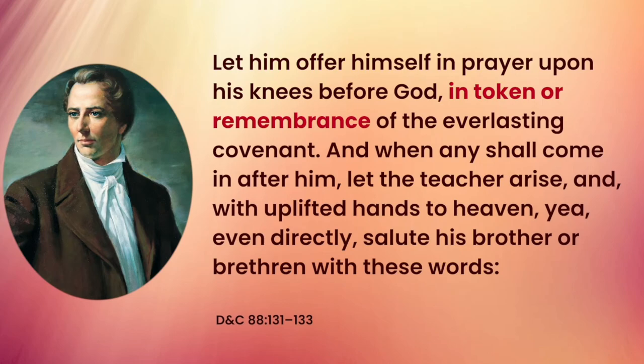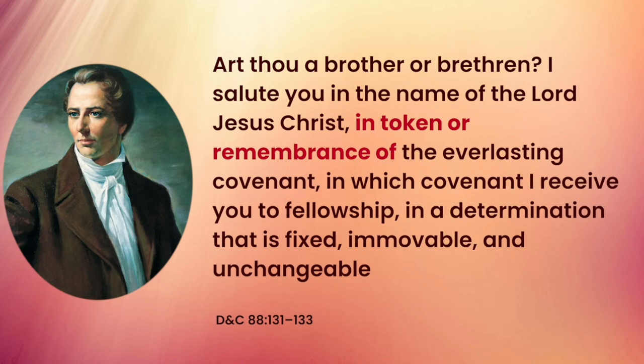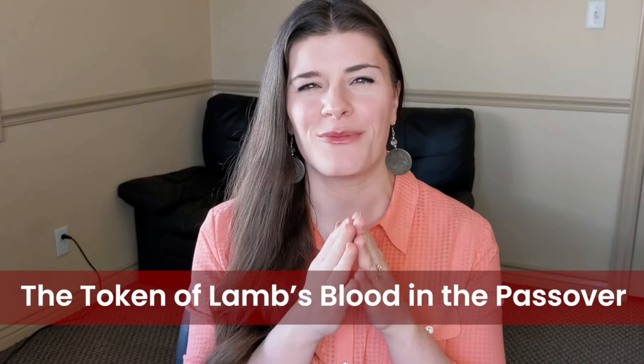In 1832, Joseph Smith revealed section 88 of the Doctrine and Covenants, where the Lord gave instructions for how members of the School of the Prophets should address and identify each other: "Let him offer himself in prayer upon his knees before God in token or remembrance of the everlasting covenant. And when any shall come in after him, let the teacher arise, and with uplifted hands to heaven, salute his brother or brethren with these words: Art thou a brother or brethren? I salute you in the name of the Lord Jesus Christ in token or remembrance of the everlasting covenant, in which covenant I receive you to fellowship, in a determination that is fixed, immovable, and unchangeable."